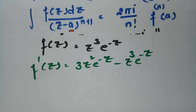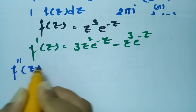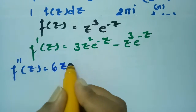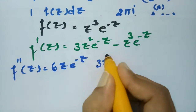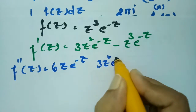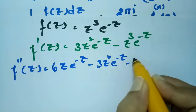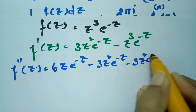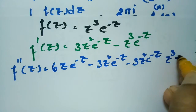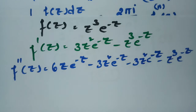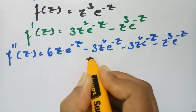Now for the second derivative, applying the product rule again: the derivative of 3z²e^(-z) gives 6z·e^(-z) minus 3z²·e^(-z). Then the derivative of minus z³e^(-z) gives minus 3z²·e^(-z) plus z³·e^(-z). So f''(z) equals 6ze^(-z) minus 3z²e^(-z) minus 3z²e^(-z) minus z³e^(-z).